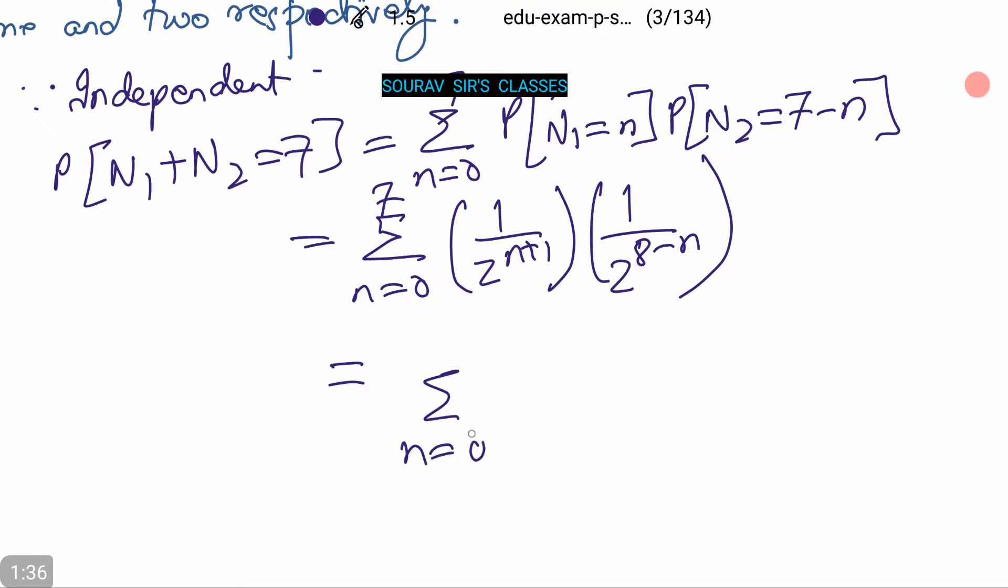So this comes to summation n equals 0 to 7 of 1/(2^9). That is 8/(2^9) which is equal to 1/(2^6), since 8 is 2^3, and the answer is 1/...